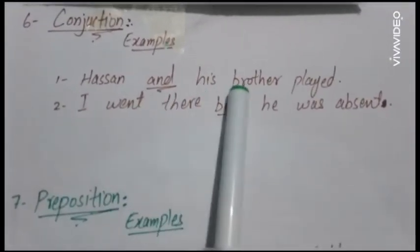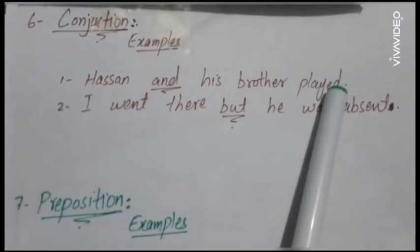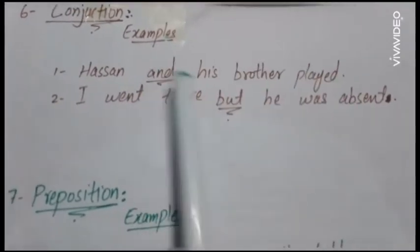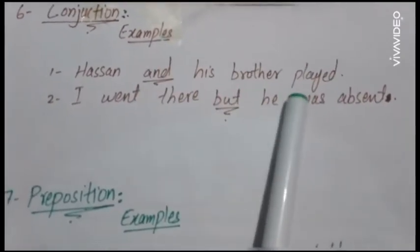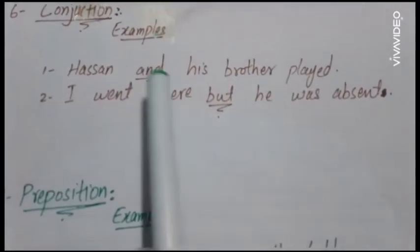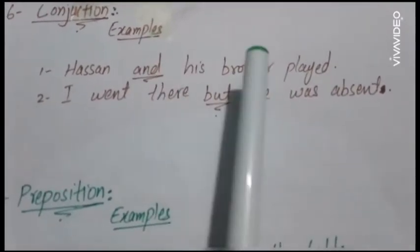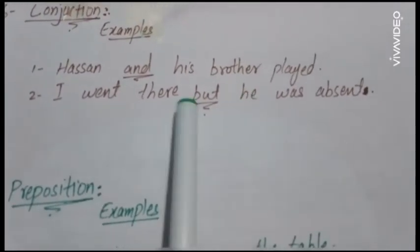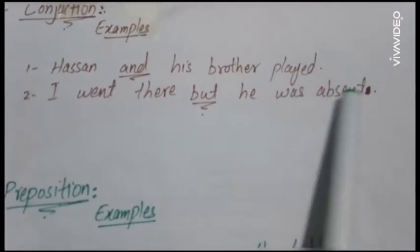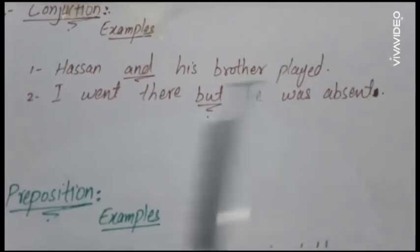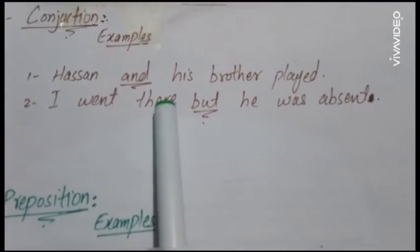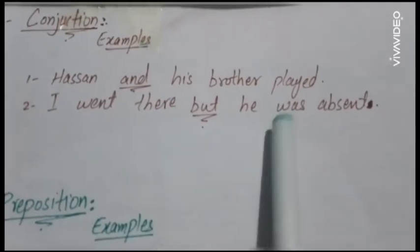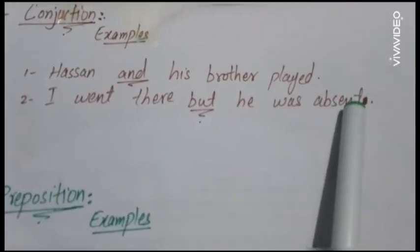Hassan and his brother played. Hassan and his brother are playing. Hassan and his brother are playing. I went there, but he was absent. Now, 'I went there' is a complete sentence. 'But he was absent' is also a complete sentence.